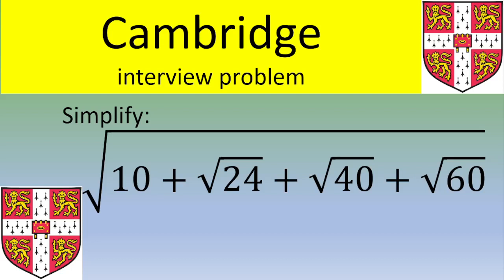Hello and welcome. In this video, the exercise was given for the entrance exam at Cambridge. The problem is to simplify square root of 10 plus square root of 24 plus square root of 40 plus square root of 60. If you want to give it a try, please pause the video — otherwise, let's see the solution.